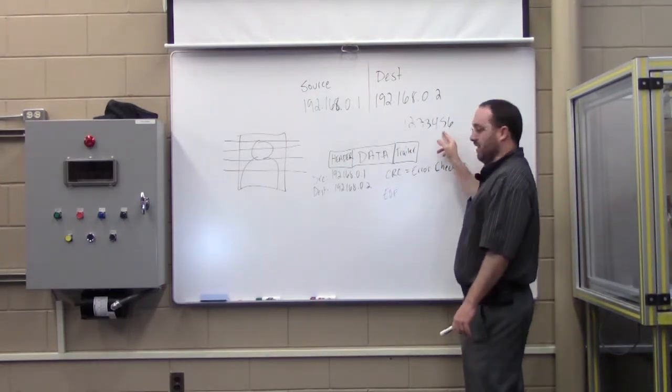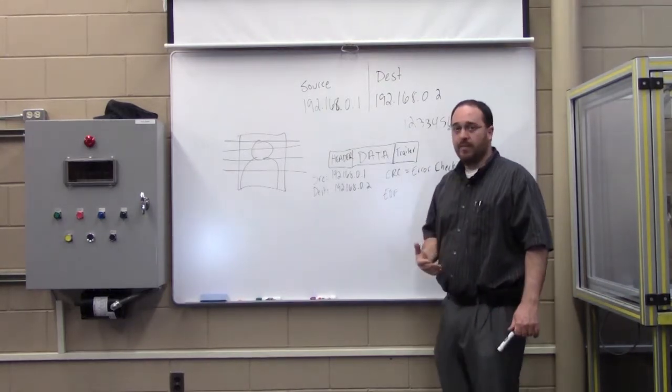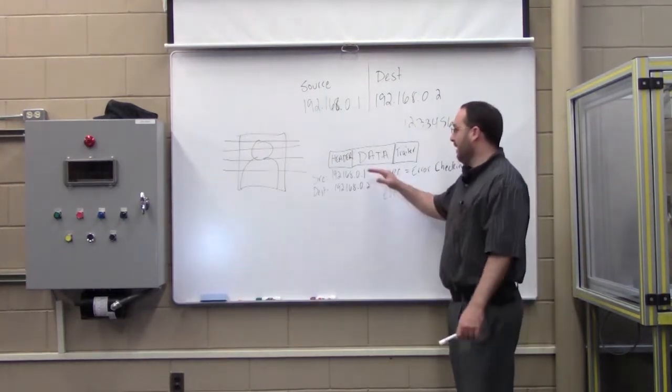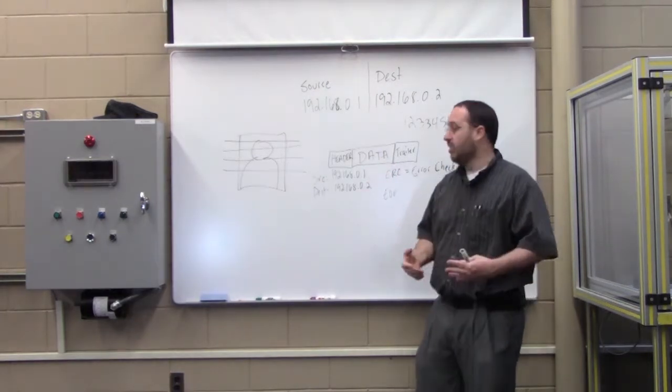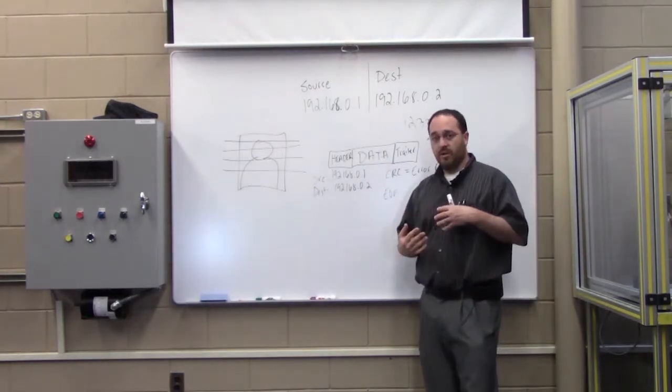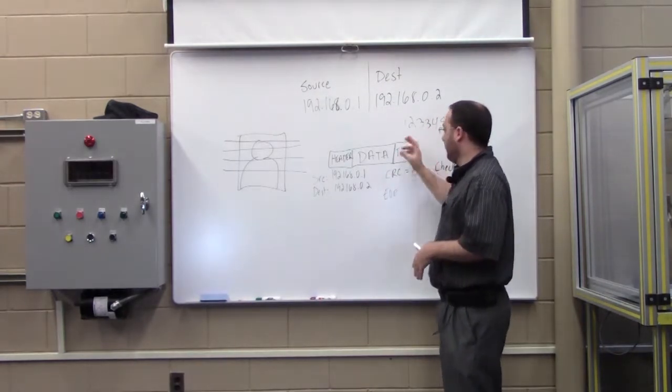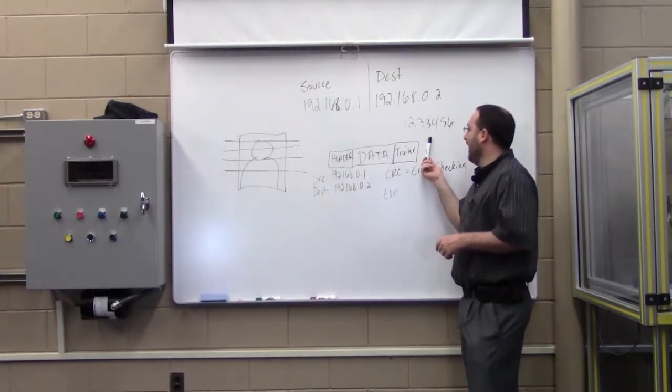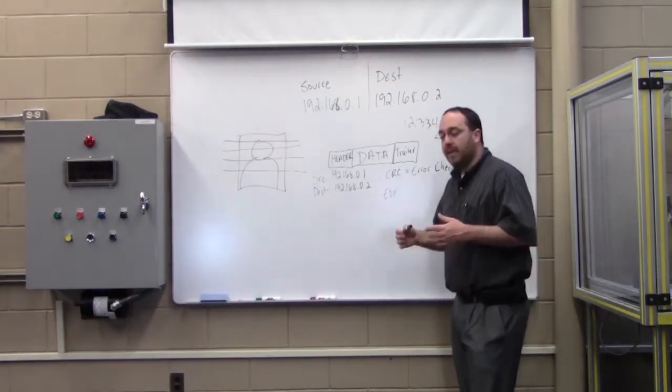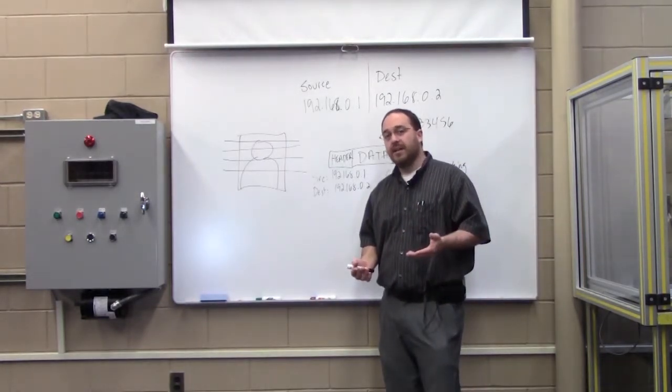If we get a different answer, then we know that there is a problem in the frame. Either the frame has been tampered with or there's been some sort of collision. There's some sort of a problem with the communications on the network that has caused this frame to become corrupt. At that point in time, the receiving computer would discard the frame and request that frame again.